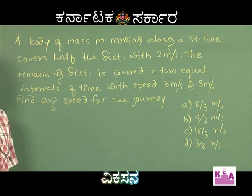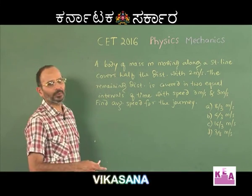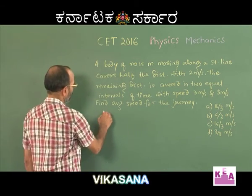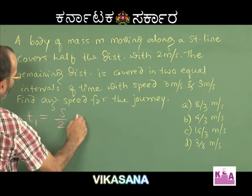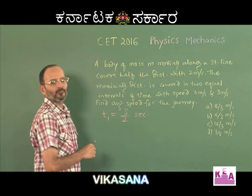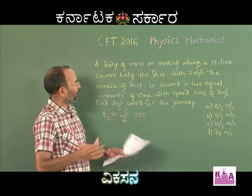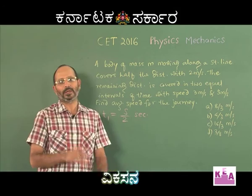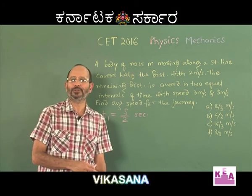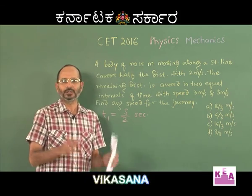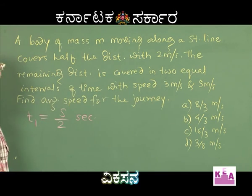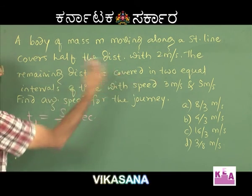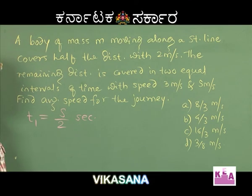The speed covering the first half of the distance is 2 m/s. Using distance and speed to find the time taken: t₁ = s/2 seconds. Now, I will divide the time taken for the second journey into 2 equal parts. Let the total time for the second journey be 2t, so each equal interval is t. The first interval t is covered at a speed of 3 m/s. Knowing the time and speed, the distance travelled is: distance = speed × time = 3 × t.